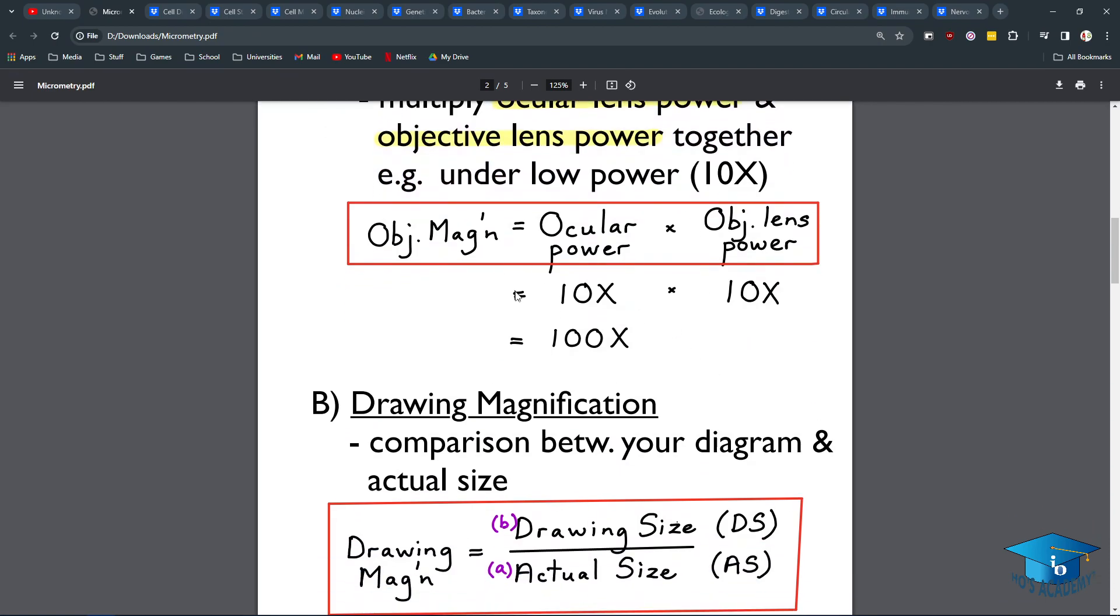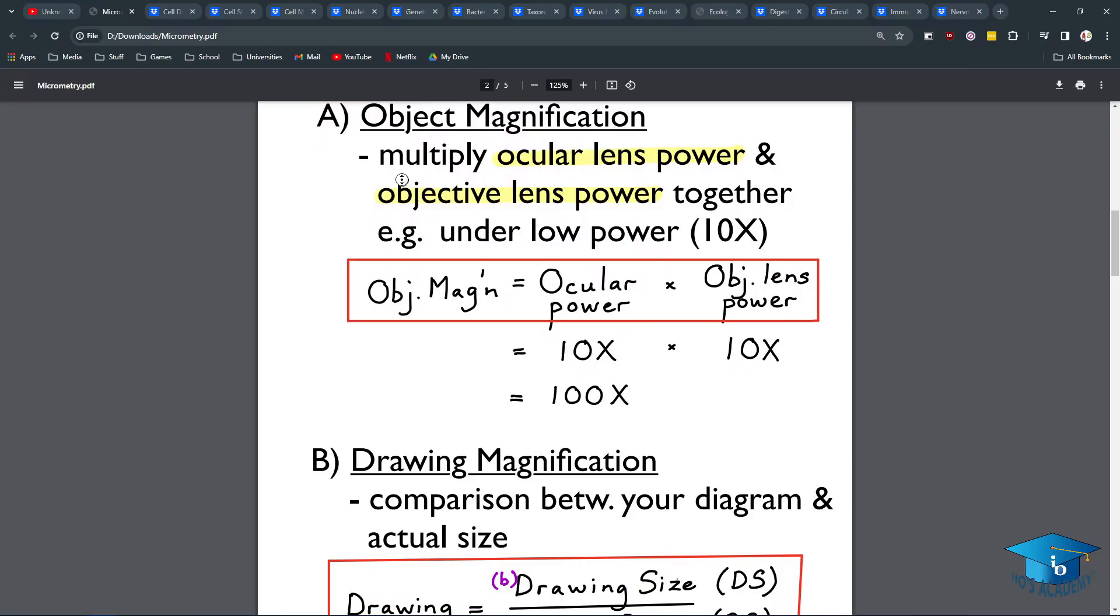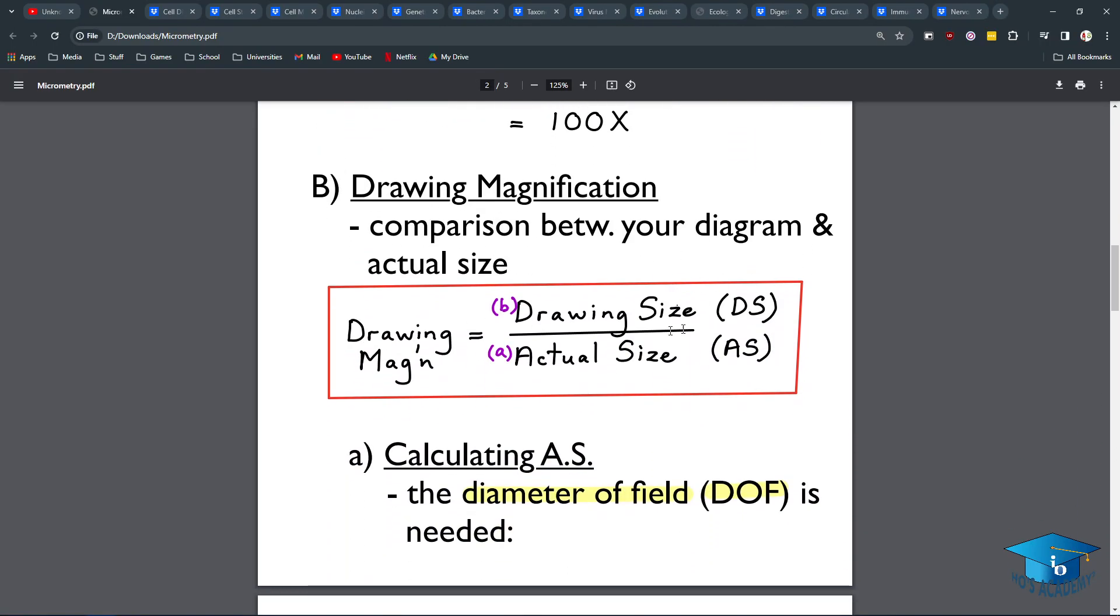Object magnification is to do with the microscope's usage, so you have to multiply the ocular power and the objective lens power. I don't think they really test on this. Drawing magnification, this is the important ratio: drawing size over actual size. This ratio is how you figure out your magnification and how you might draw a scale bar.